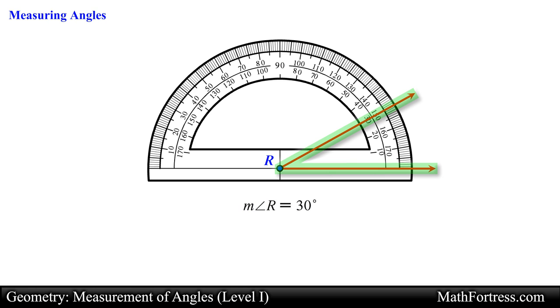In order to denote the measurement of an angle we first write a lowercase m followed by the name of the angle. This is read as the measurement of angle r is 30 degrees.